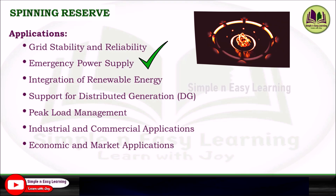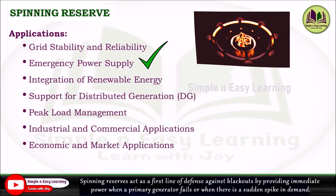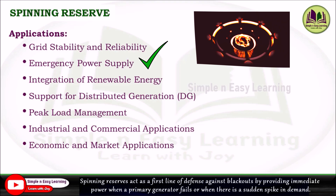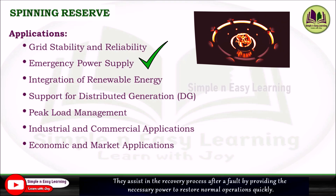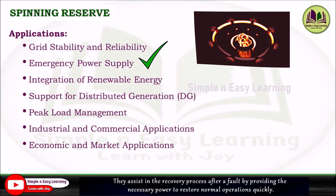The second application is emergency power supply. Spinning reserves act as a first line of defense against blackouts by providing immediate power when a generator fails or when there is a sudden spike in demand. They also assist in the recovery process after a fault by providing the necessary power to restore normal operation quickly.